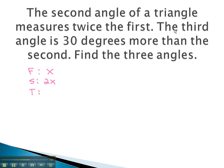Continuing to read, we find the third angle is 30 degrees more than the second. Thirty degrees more means we add 30, built backwards, to the second angle. The second angle was 2x.